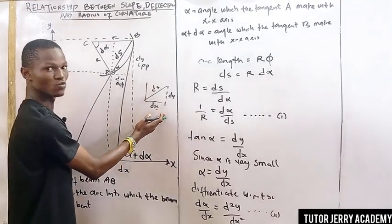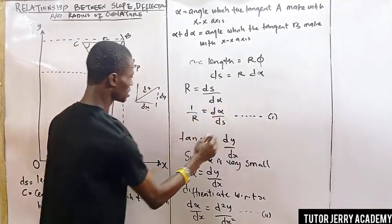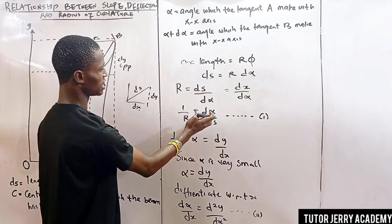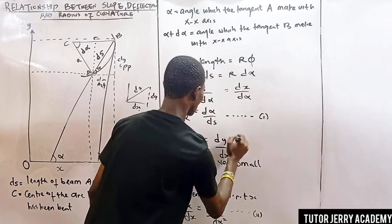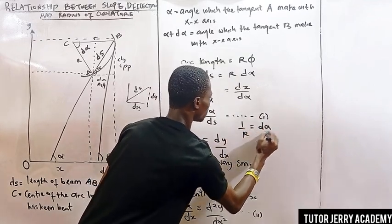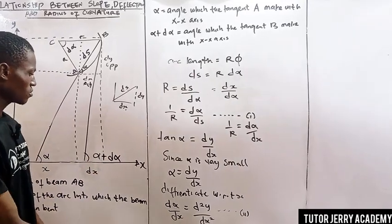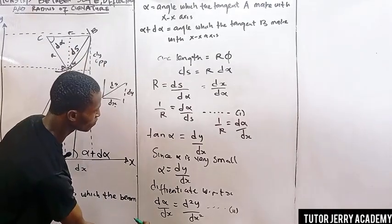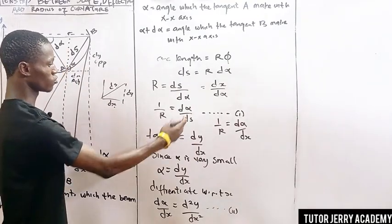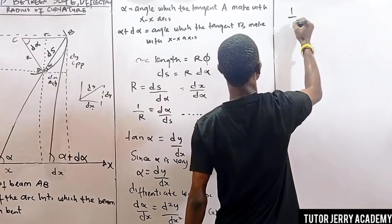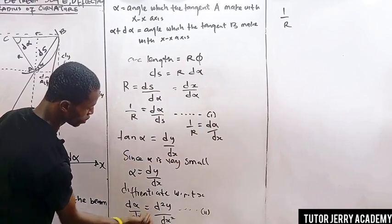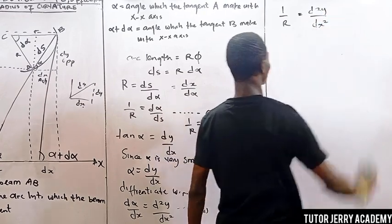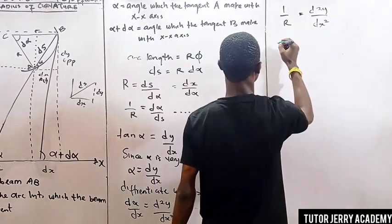From this we can say dx over d-alpha, and taking the reciprocal, d-alpha over dx. So equation one now reads: one over R equals d-alpha over dx. From equation two, we have already established that d-alpha over dx equals d-squared-y over dx-squared. Since d-alpha over dx equals one over R, substituting gives us one over R equals d-squared-y over dx-squared.